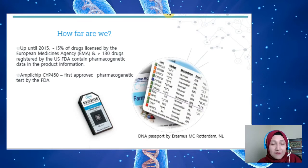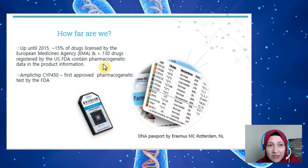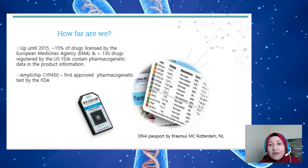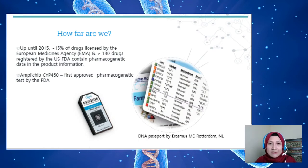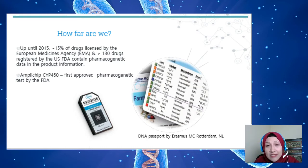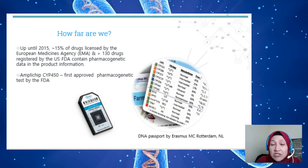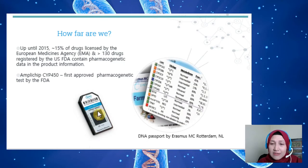In terms of pharmacogenomics progress, up to 2015 — and likely more now — about 15% of drugs licensed by the European Medicines Agency (EMA) and more than 130 drugs registered by the US FDA contain pharmacogenetic data in their product information. Before a drug is licensed for market, it must undergo pharmacogenomic studies to identify pharmacogenetic predictors that might affect drug response or toxicity, and this data must be included in the product leaflet.